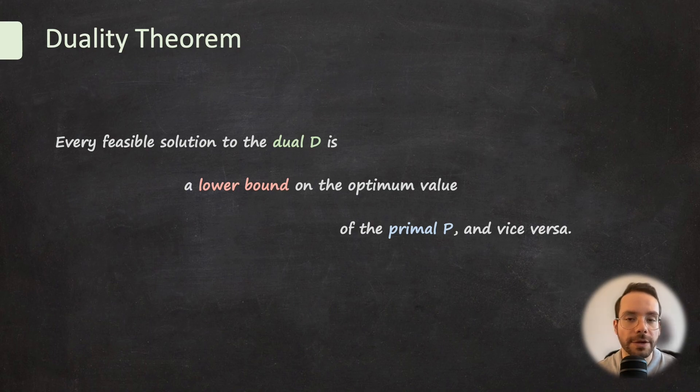It allows us to gain insight into the primal problem by analyzing its dual. It provides a way to check the optimality of the solutions and to understand the trade-offs between primal and dual variables. Duality is a powerful tool that enhances our understanding of linear programming problems, making it a cornerstone in optimization theory.